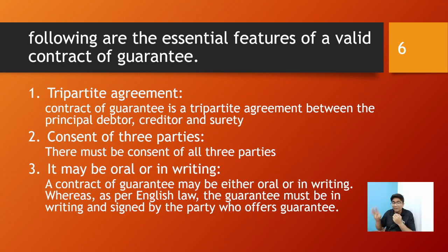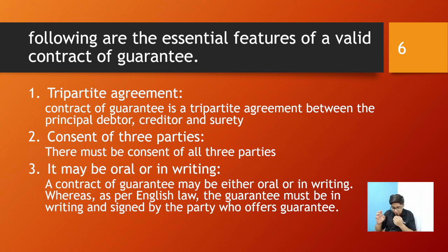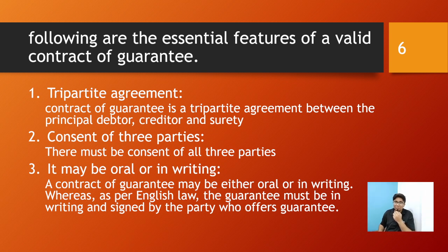The second essential is consent of all three parties. All three parties should agree — I, you, and the surety must all consent. If any one of the three is not agreeing, it cannot happen. A contract of guarantee may also be either oral or in writing, whereas as per English law the guarantee must be in writing and signed by the party offering the guarantee. Indian Contract Act allows oral guarantees, but a written guarantee is always preferred since oral agreements can be denied.